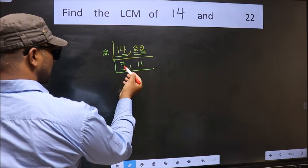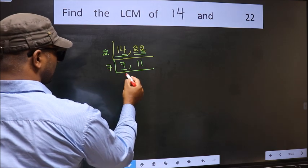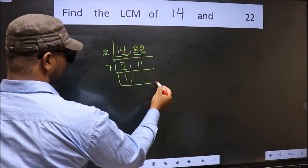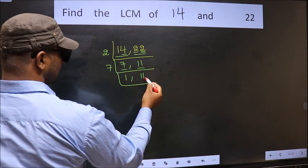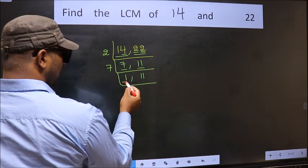Now, here we have 7. 7 is a prime number. So, 7 1s, 7. The other number 11, not divisible by 7. So, we write it down as it is. We got 1 here.